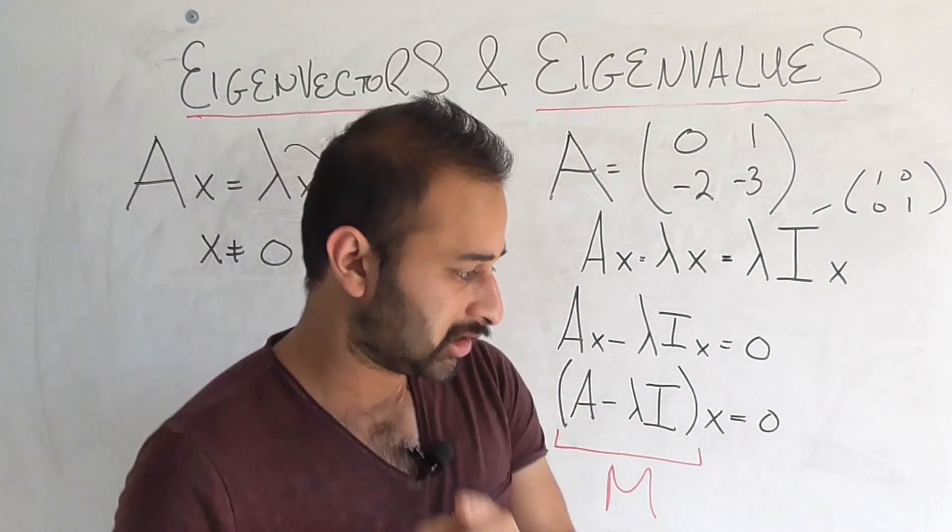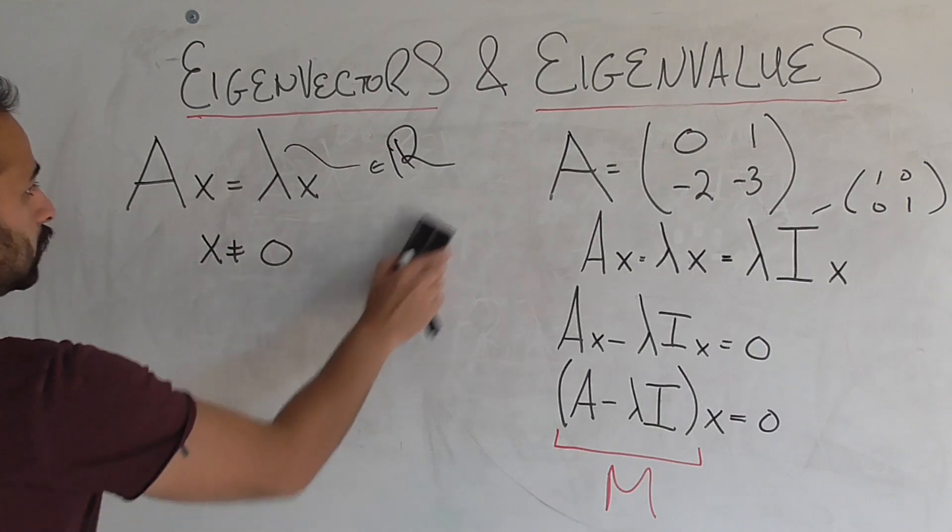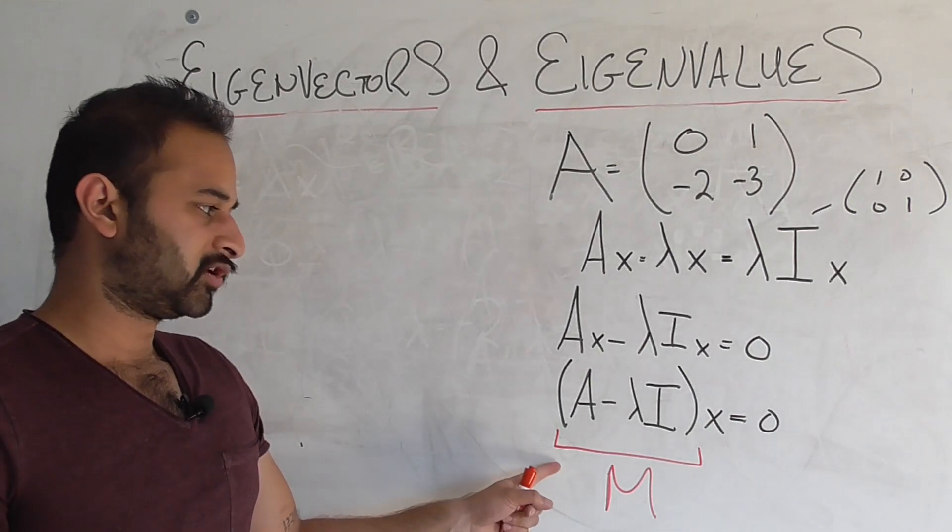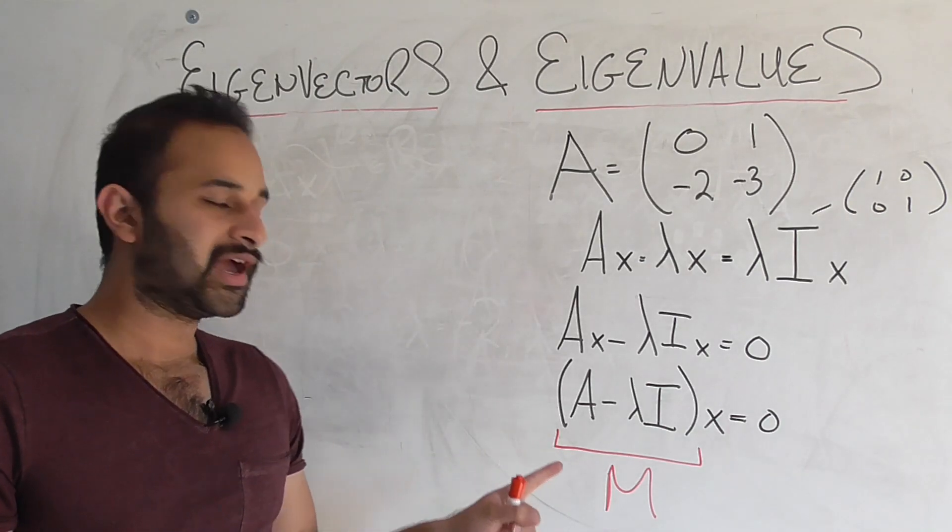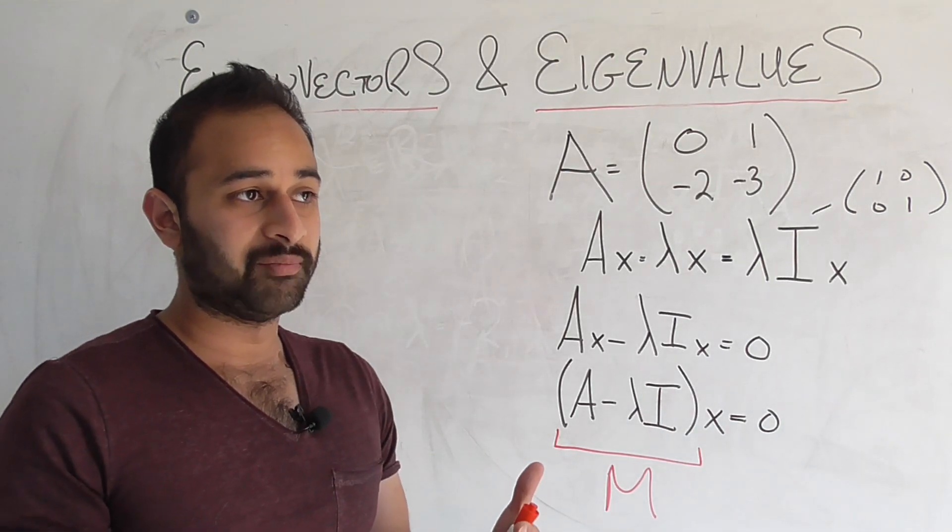Well we know something important about its determinant, right? Let me create some space right here. So let me erase the definition here. If we know matrix M is not invertible, we know its determinant has to be equal to 0 because the converse is true. We know that if a matrix is invertible, its determinant is not equal to 0, okay?